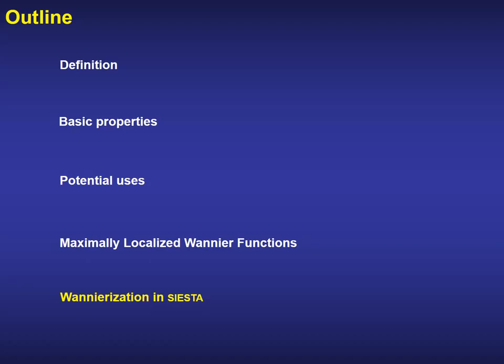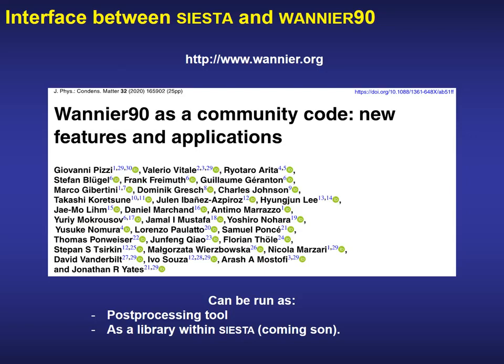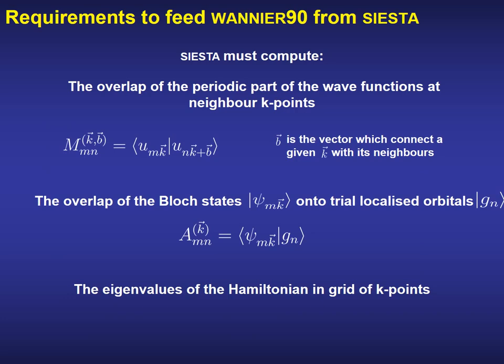So finally, how the wannierization is done in SIESTA. We have implemented an interface between SIESTA and the Wannier90 code. Right now, Wannier90 can be run as a post-processing tool. But very soon, its use as a library within SIESTA will be available in the master branch. In order to minimize the spreading and produce the maximally localized Wannier functions, Wannier90 requires some matrices that must be computed in SIESTA. Those matrices are the overlap of the periodic part of the wave function at neighbor K points. The second matrix is the overlap of the Bloch states onto a trial set of localized orbitals that will be used as a starting point for the minimization procedure. And the third ingredient to feed Wannier90 from SIESTA are the eigenvalues of the Hamiltonian in a grid of K points.